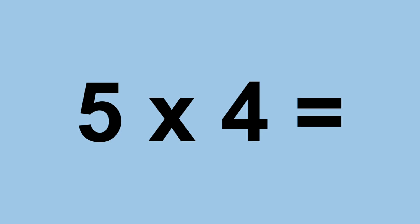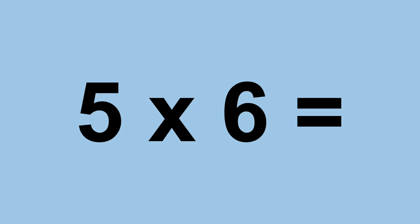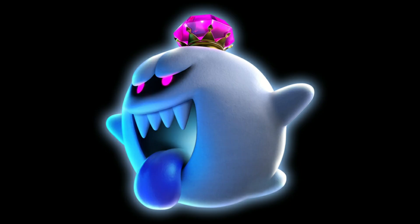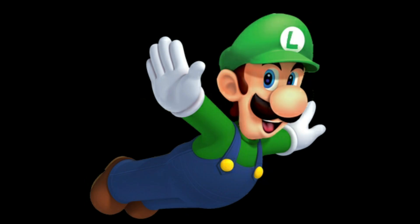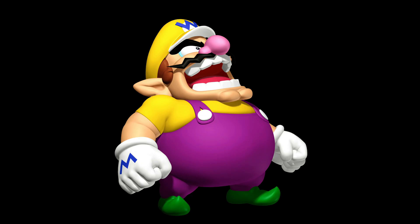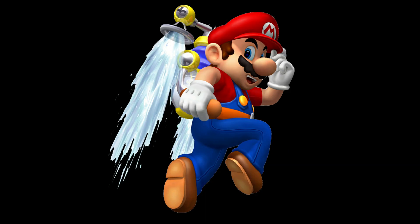Five times nine equals forty-five. Five times ten equals fifty. Five times eleven equals fifty-five. Five times twelve equals sixty.